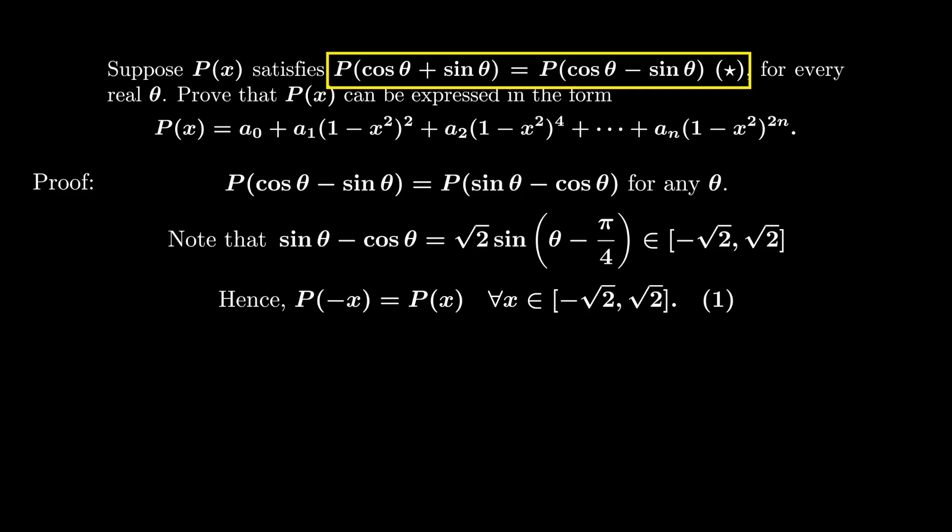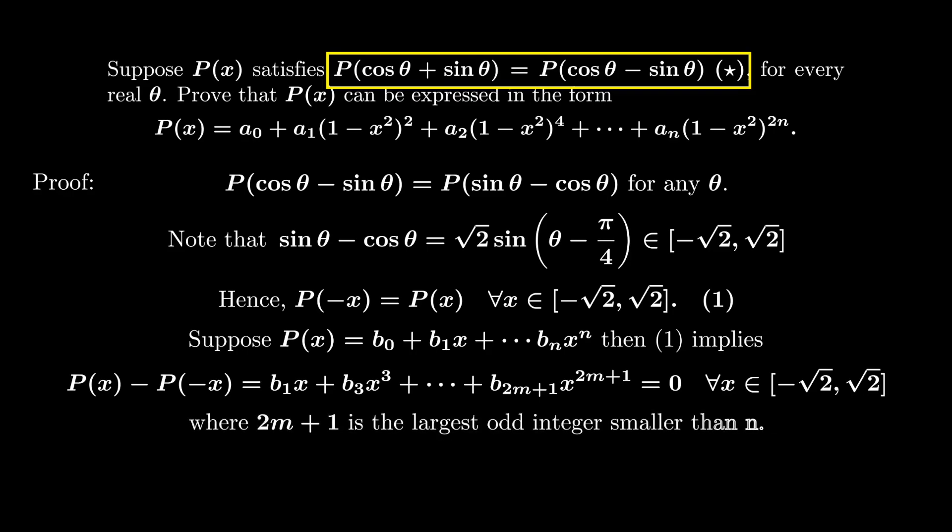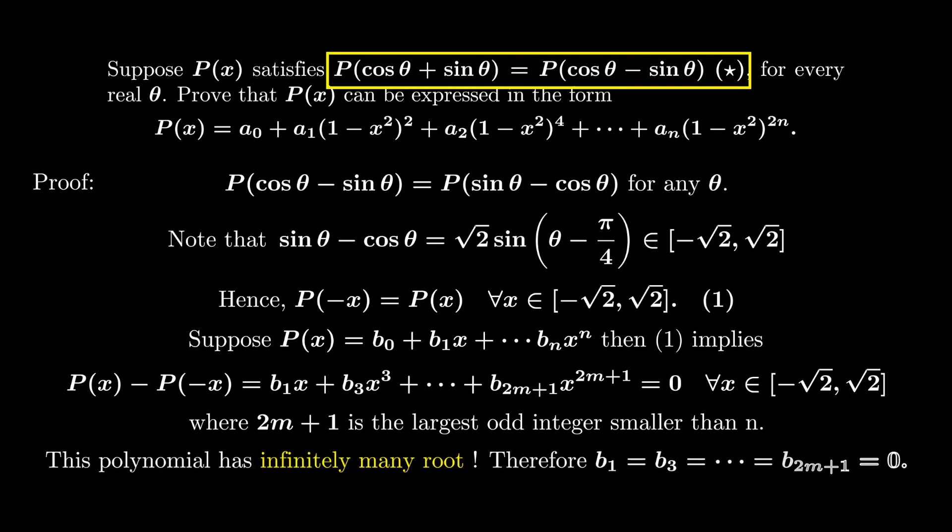Now if we expand the polynomial P and write down P(x) - P(-x), it contains all the odd powers. Note that this is still a polynomial, but it has infinitely many roots. So the only possibility is that all the coefficients are zero. In other words, P(x) is even.